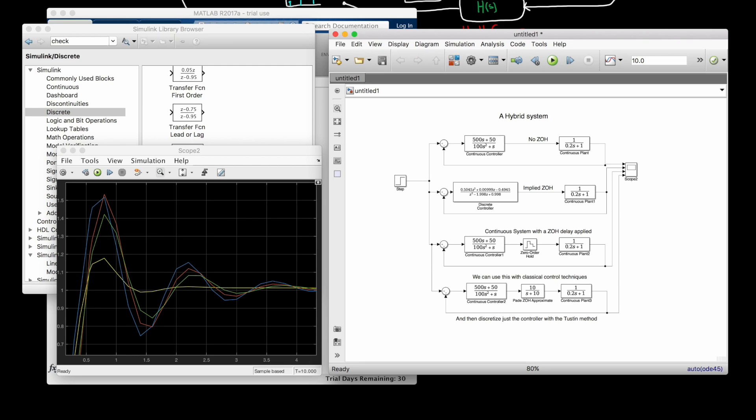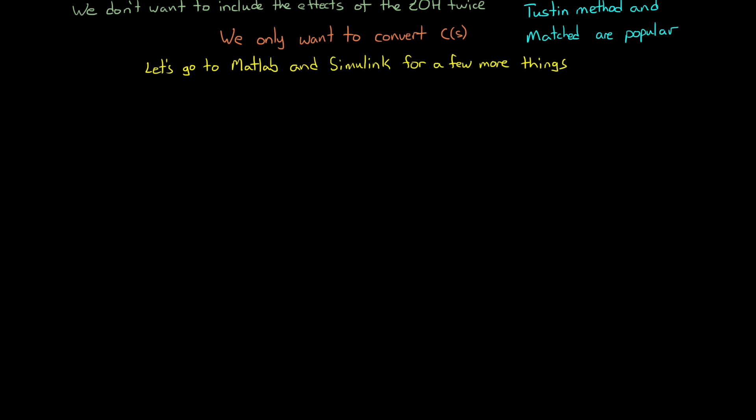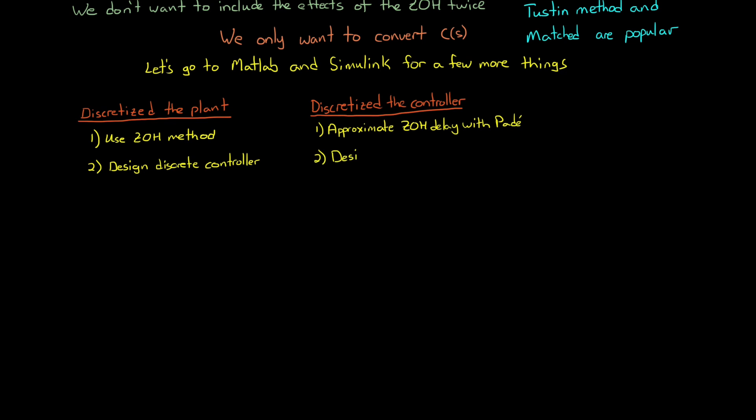So let's summarize the approaches that we can take to design a discrete controller. If we want to design a discrete controller directly using classical Z domain control techniques, we can discretize the plant with a method that includes the zero-order hold. In this way, we have the entire model in the Z domain and we can design our discrete controller directly using that. If we want to design a continuous controller first using classical S domain control techniques, we can mimic the zero-order hold with a Pade approximation S domain transfer function. Then design our controller and finally discretize it with a method that doesn't include the zero-order hold, like the Tustin method.